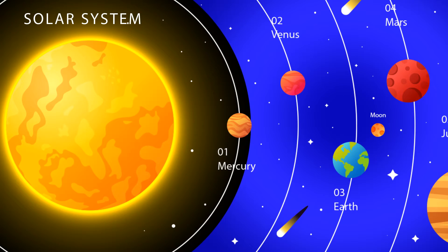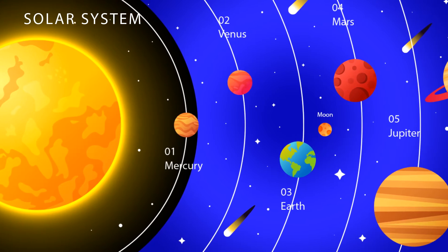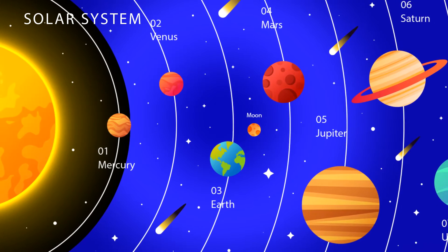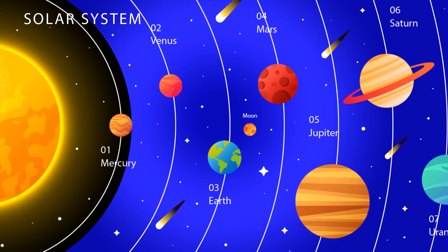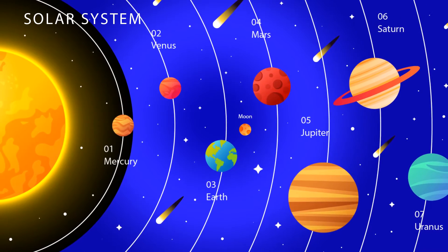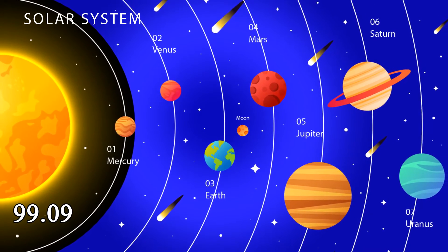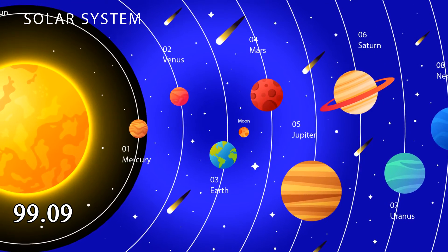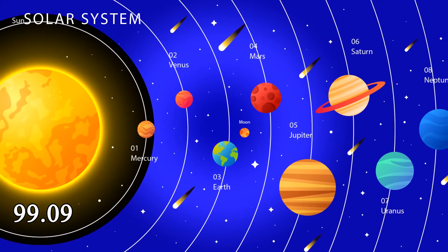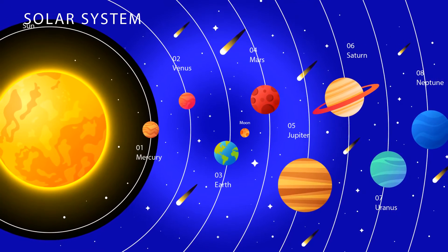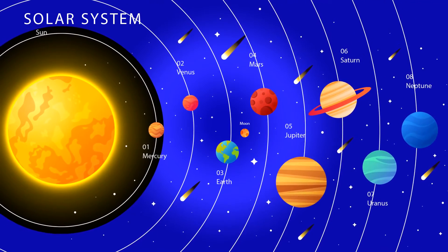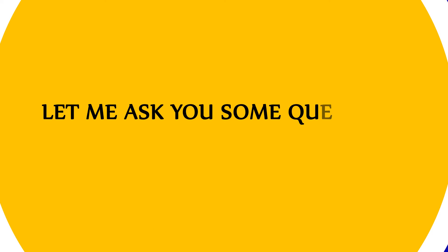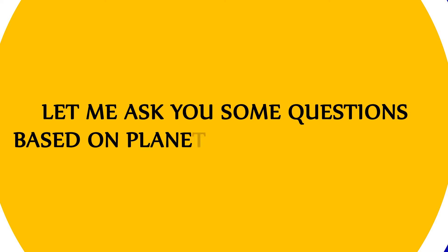The solar system is the Sun and all the objects that orbit around it. The Sun is orbited by planets, asteroids, comets, and other things. It contains 99.9 percent of the solar system's mass, which means it has strong gravity. The other objects are pulled into orbit around the Sun.